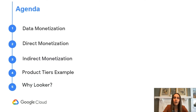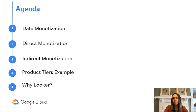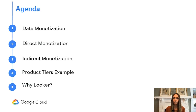To start with a simple agenda, I want to talk a little bit about data monetization — specifically how we define it here at Looker and why it's so important within the industry. Most of the presentation today is really going to focus on two pieces: direct monetization and indirect monetization, the difference between the two, and really why you should have a strategy for both. Then we'll wrap up by walking through a couple of product tier examples and ways you can think about employing this within your products today.